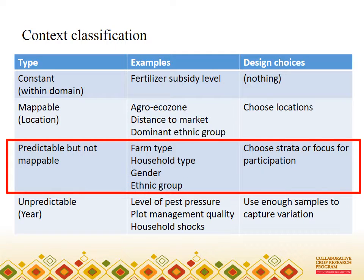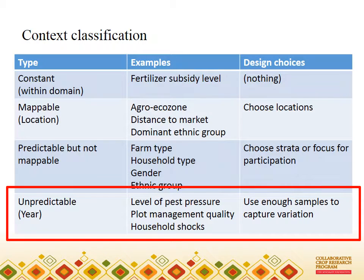Thirdly, there are those which are predictable in the sense that you can find out their value before the study starts and it's unlikely to change during the study, but you can't fix them by choosing a location. Gender of farmer in the previous example was such a factor. And lastly, there are those factors which are unpredictable — you don't know what they will be until the experiment has finished. The weather during the season is one such variable, as is the level of pest pressure experienced, and the quality of management of experimental plots is another. For such factors, you have to have enough repeats of the experiment to experience a range of levels if you want to understand how they interact with treatments.